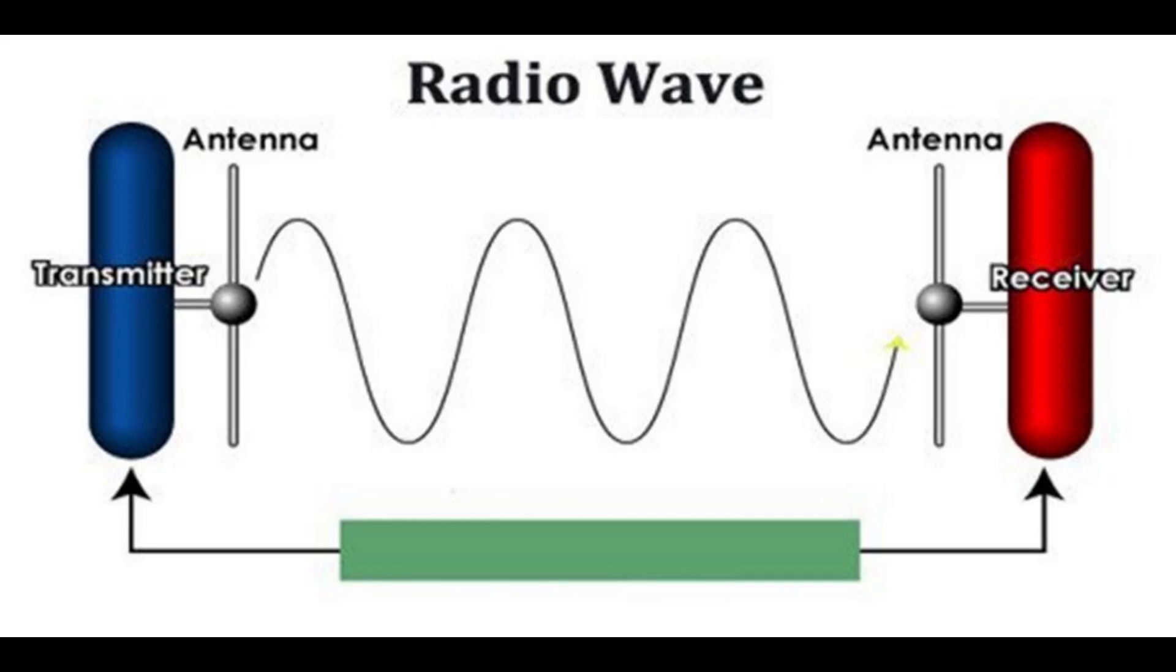The receiver first uses a bandpass filter to separate the desired radio station's radio signal from all the other radio signals picked up by the antenna, then amplifies the signal so it is stronger, then finally extracts the information-bearing modulation signal in a demodulator.